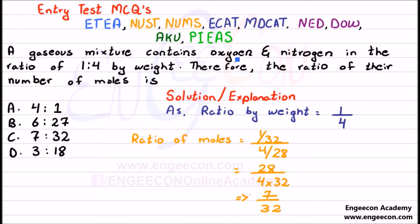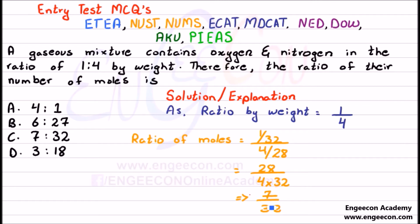It is given that oxygen and nitrogen are present in the ratio 1:4 by weight. We calculate their moles as mass in grams divided by the molecular mass — for O₂ and for N₂. On solving, we get the ratio 7:32.